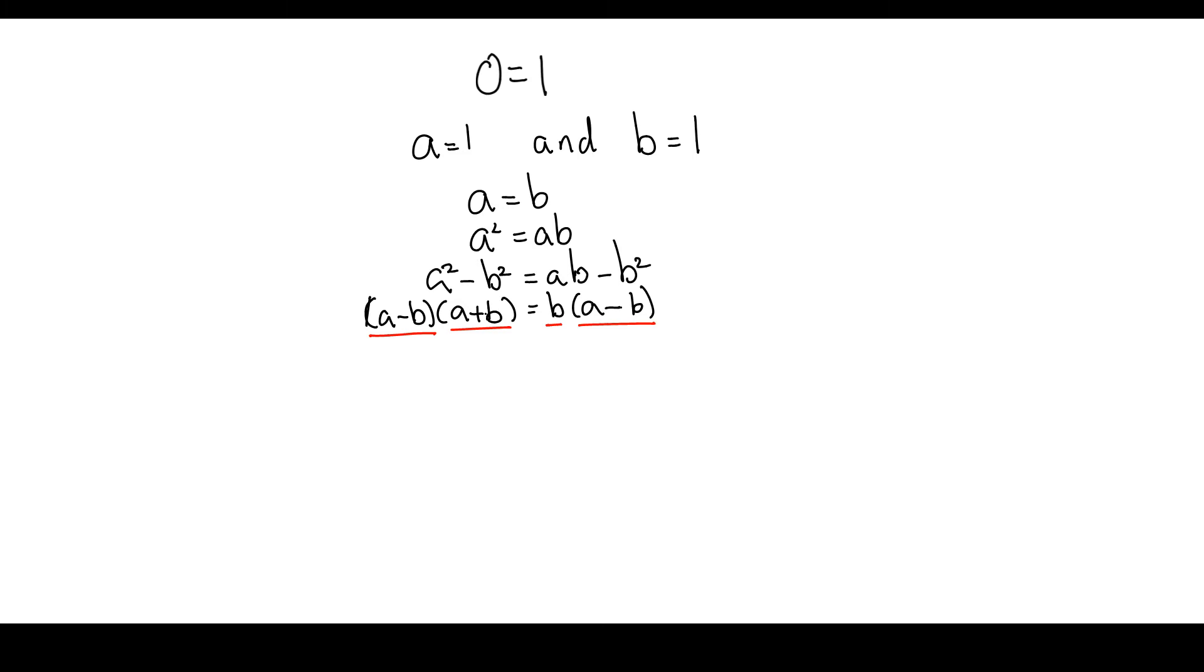But when we go to the next line and we divide by A minus B, we've effectively divided by 0. And if you get your calculator out and try and do that, you're going to get a math error.